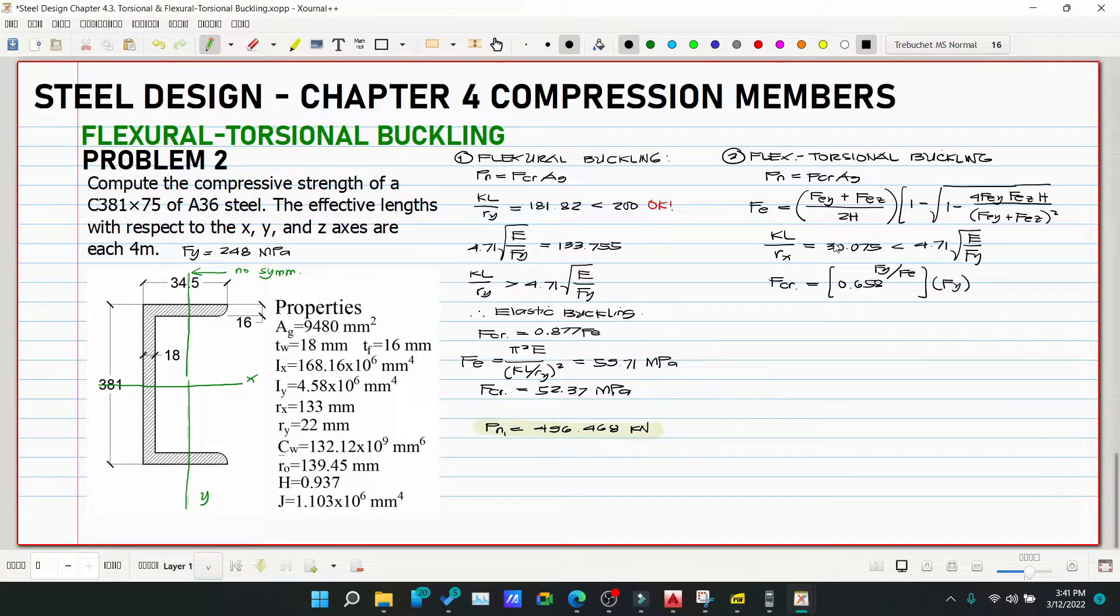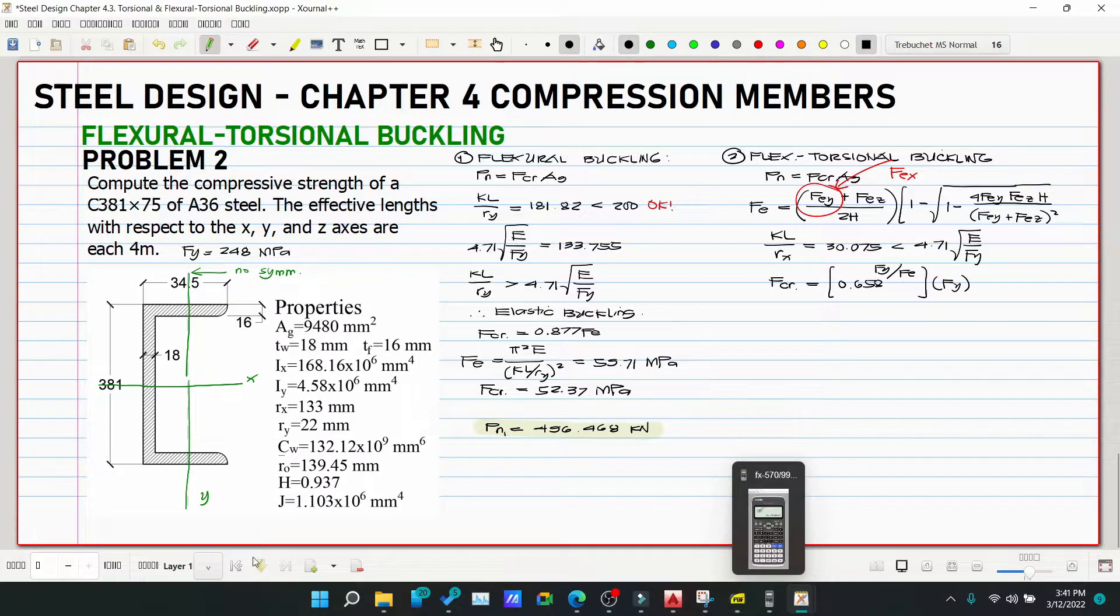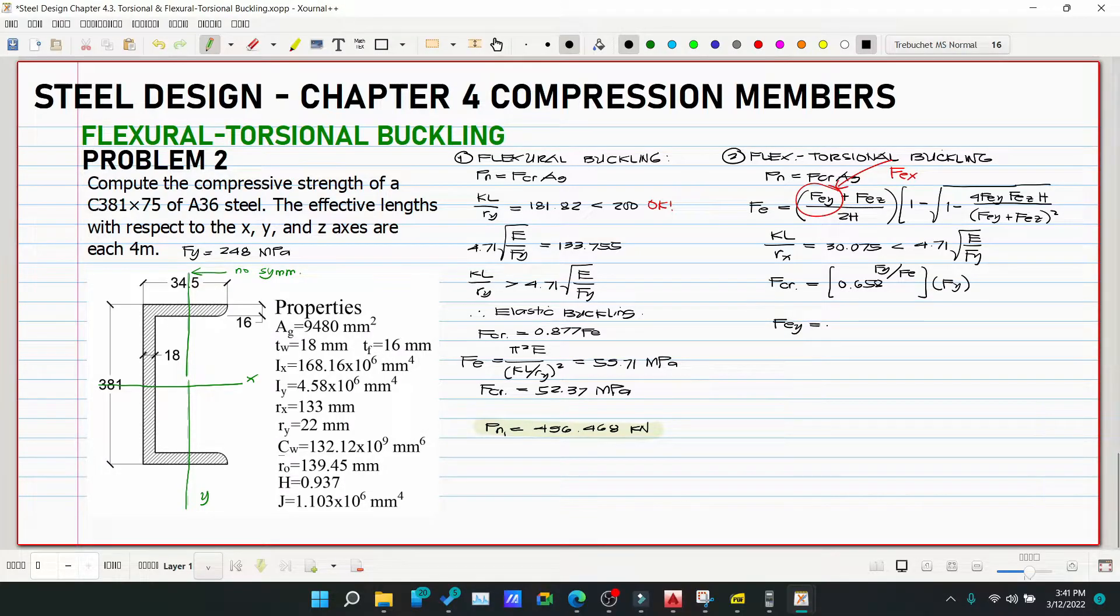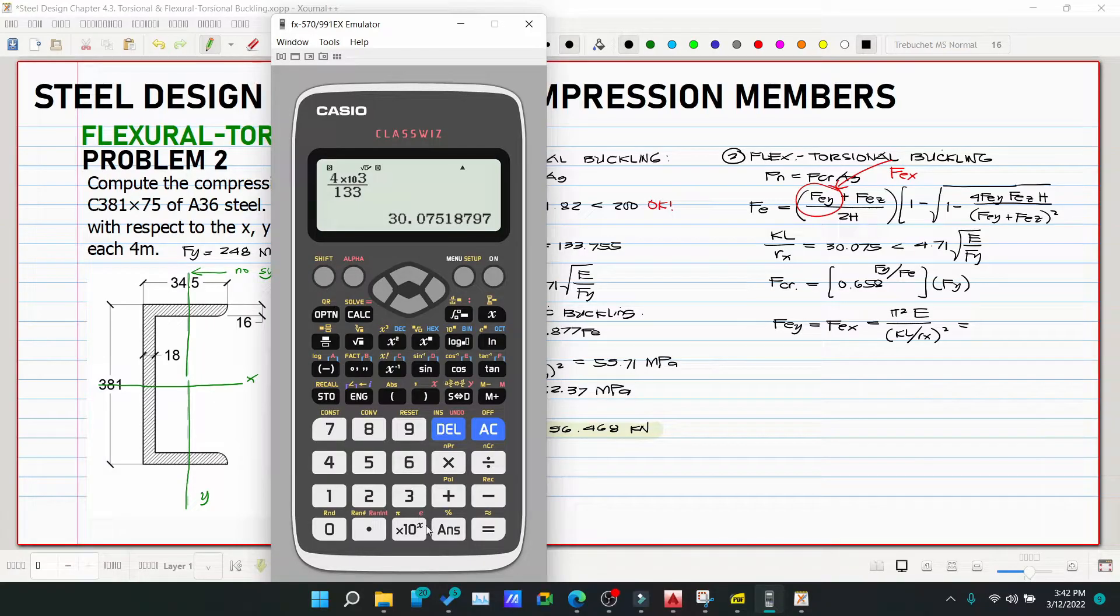Let's solve our Fe from this equation. Fey becomes Fex because our axis of symmetry is the x-axis. So Fex is equivalent to π²E/(L/rx)². π²E/30.08² = 2182.32 megapascals.